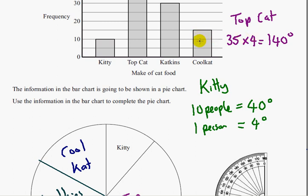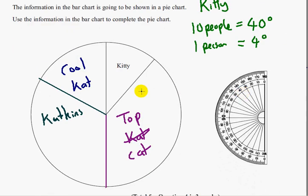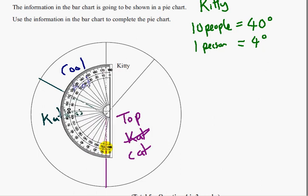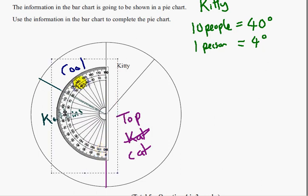And let's just check that the last angle, the last section is 60 degrees. So I'm just going to get my protractor on. And I hope you can see that it is, yes, it is 60 degrees. So we've finished the pie chart and we've labeled all the sections.